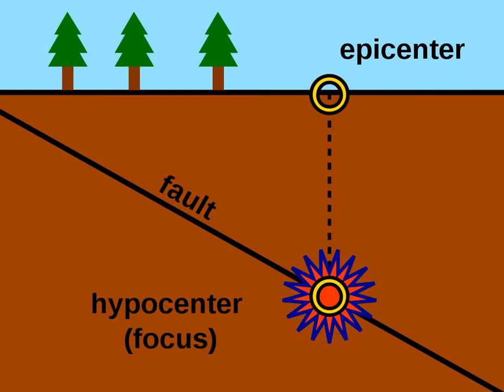A hypocenter, from ancient Greek hypokenton, meaning 'below the center', is the point of origin of an earthquake or a subsurface nuclear explosion. In seismology, it is a synonym of the focus. The term hypocenter is also used as a synonym for ground zero, the surface point directly beneath a nuclear airburst.